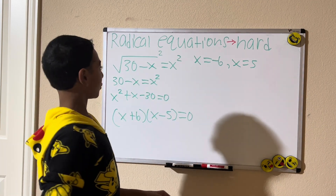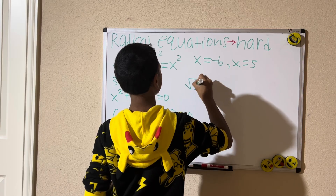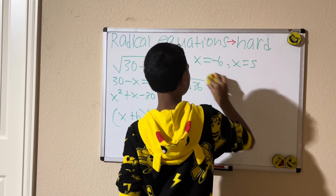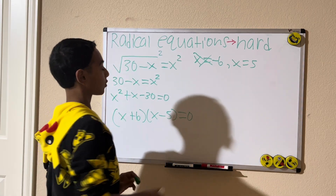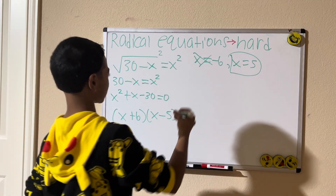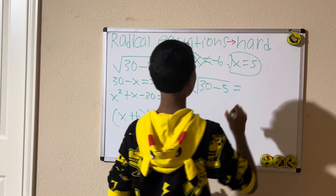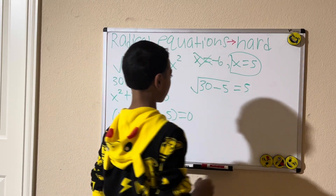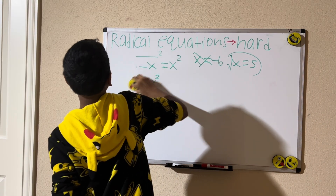We have a negative number — we cannot use it. The square root of a number can never be negative. For example, the square root of 36 can never be negative six. So we know that negative six is not one of our solutions, and our only solution is five. Let's test it: the square root of 30 minus five equals five. The square root of 25 is five, so five is our only solution.